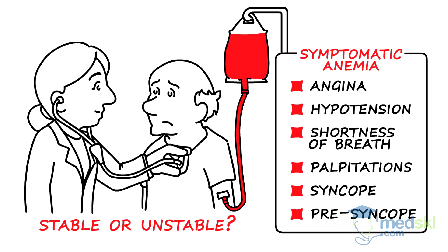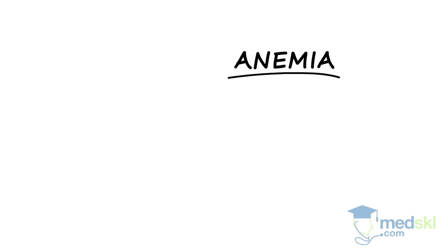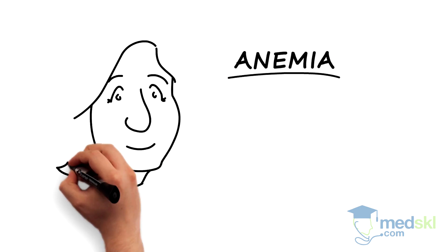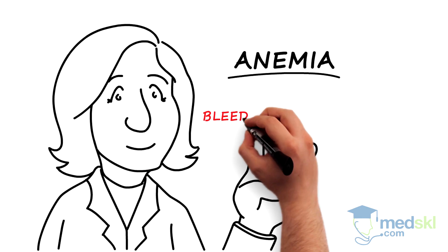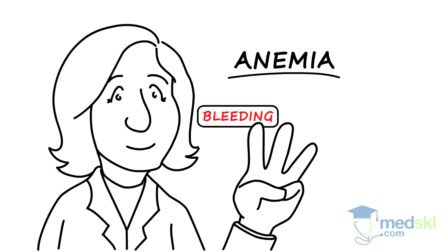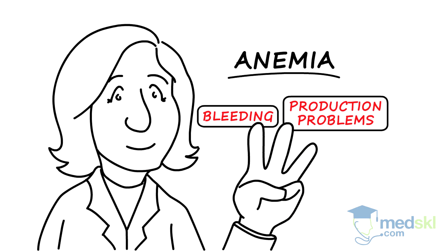The hemoglobin value alone does not determine if a patient requires a blood transfusion. Anemia is usually due to one of three processes: bleeding, bone marrow production problems, or hemolysis, which is excessive red cell breakdown.